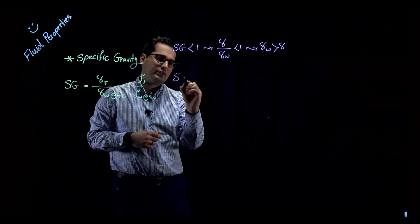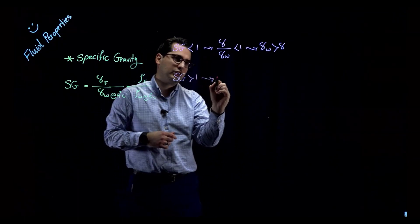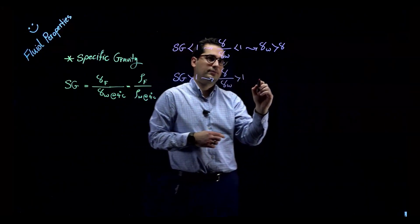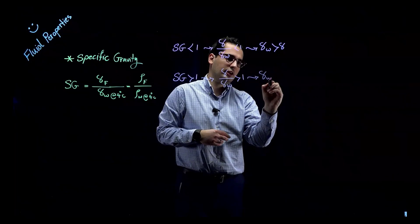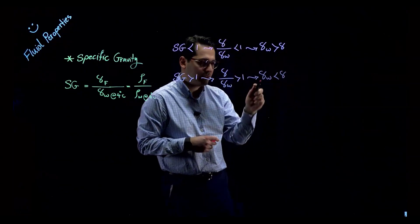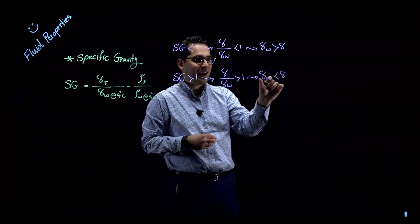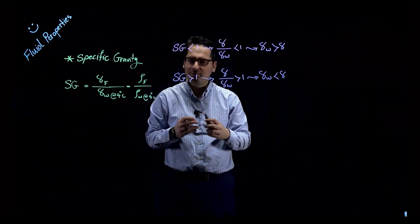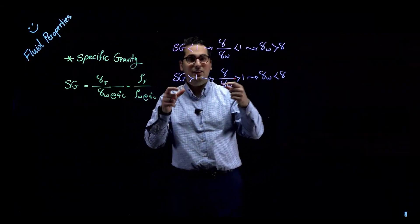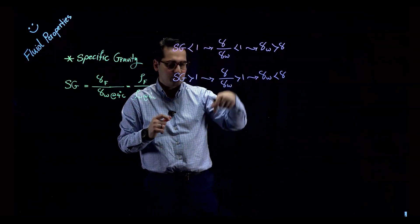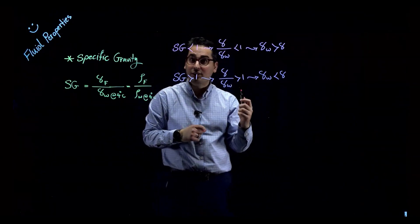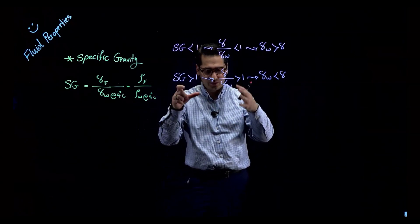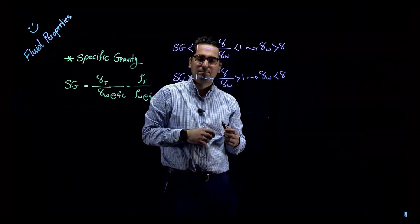If specific gravity is larger than 1, then gamma of water is less than gamma of that object — the material is denser than water and will sink. If you put a brick, a piece of concrete, or a piece of steel on top of water, it will sink underwater because those materials are more dense than water.